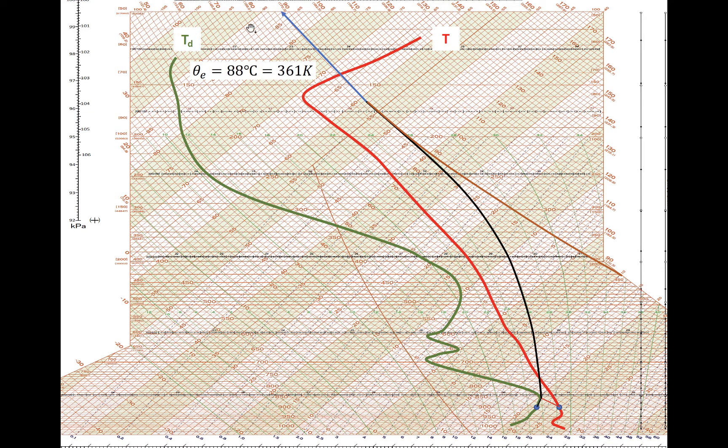The saturation equivalent potential temperature is simply a function of temperature and pressure. It describes the maximum possible equivalent potential temperature of air if it reaches saturation at the specified temperature and pressure. For a temperature of 25 degrees C at 900 millibars, follow the moist adiabat all the way up until it parallels a dry adiabat. Like you did for theta E, read off the value of the dry adiabat to get saturation theta E.